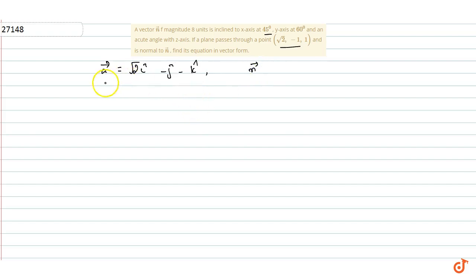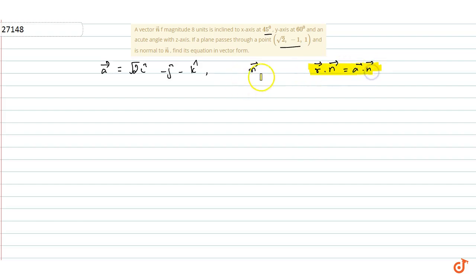When we have a⃗ and n⃗, the plane equation is r⃗·n⃗ = a⃗·n⃗. This is our plane equation, so we will use this to find the equation of the plane. First, we need to find n⃗.